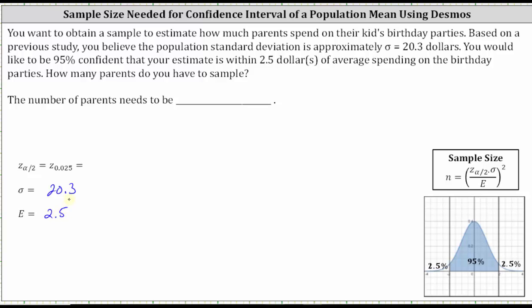We also need the z-score that corresponds to the 95% confidence interval indicated by z sub alpha divided by two, where alpha divided by two is the area to the right of the z-score. Looking at the graph on the lower right, the area to the right of the z-score is 0.025 as a decimal. To find the z-score using Desmos, we need the area to the left, which we can see would be 0.975 as a decimal.